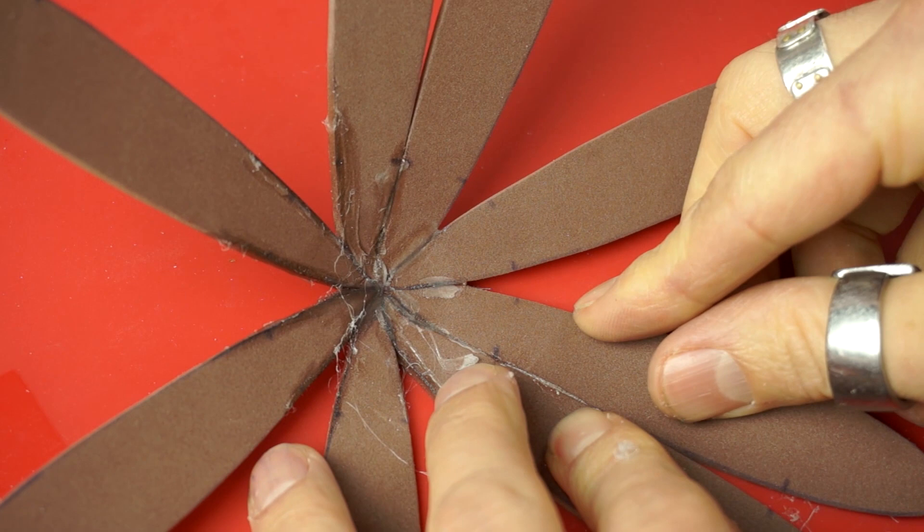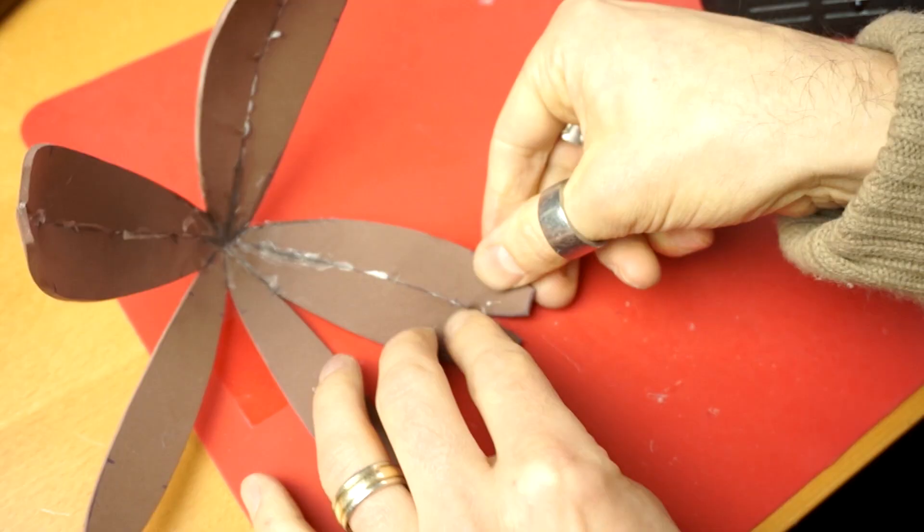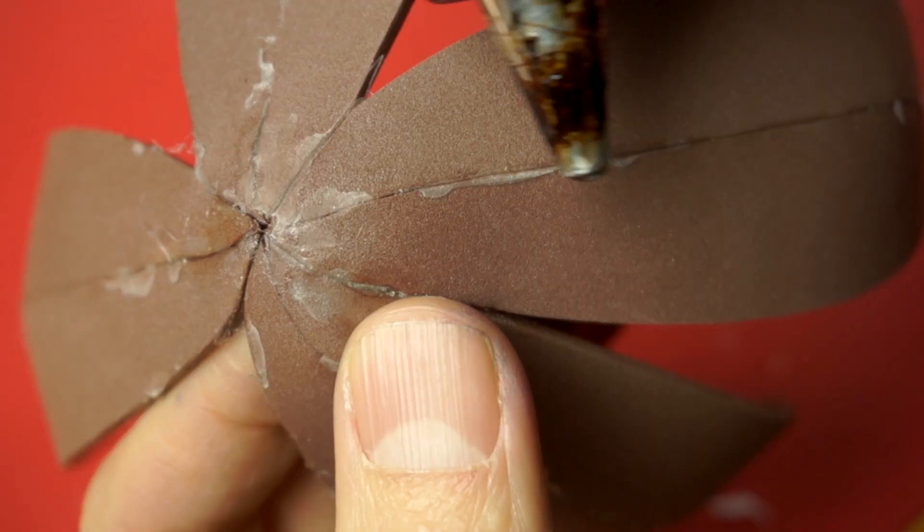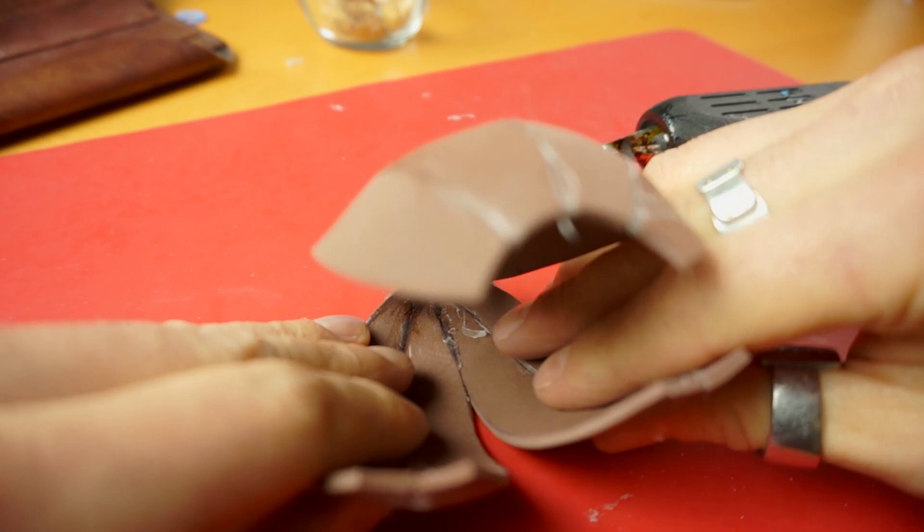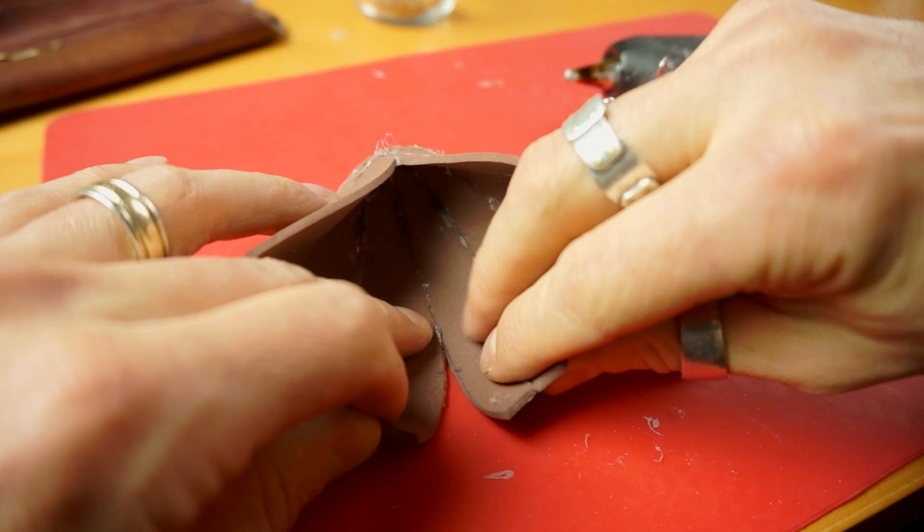Now start gluing the strips together in sets of two. The key to successfully using hot glue and thin foam is to glue a short section at a time and then hold it down against the silicone baking mat until it cools. If you do end up with extra glue on the outside, you can use the side of the tip of your glue gun to smooth it out.